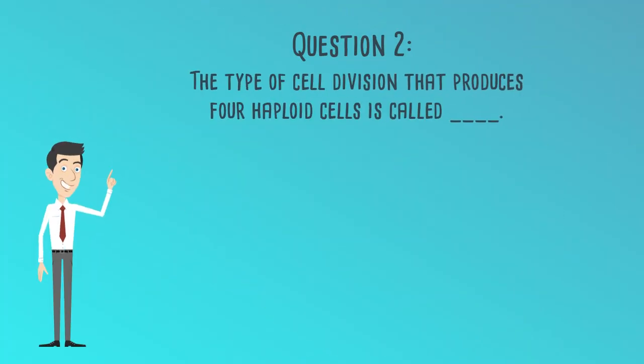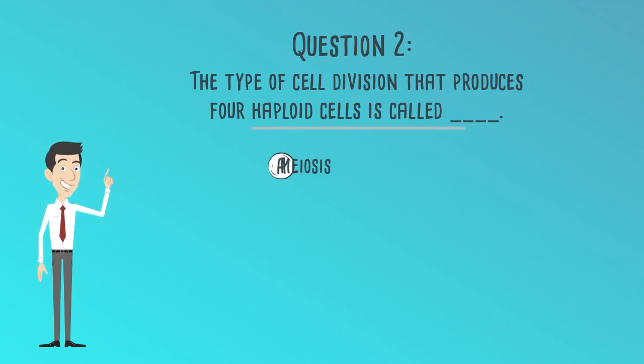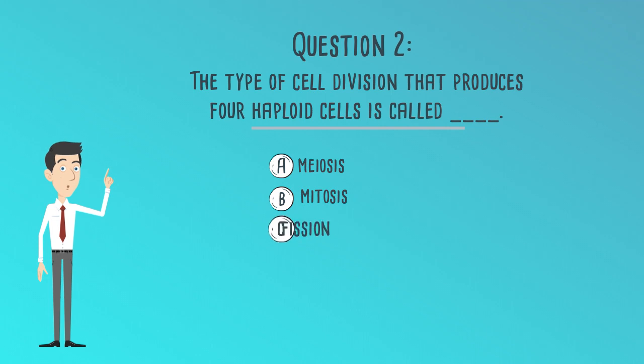Question 2. The type of cell division that produces four haploid cells is called: A. Meiosis, B. Mitosis, C. Fission, or D. Cytokinesis.